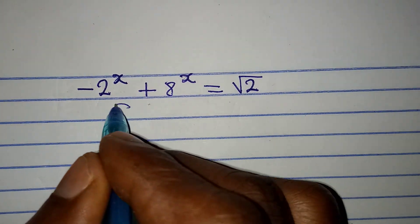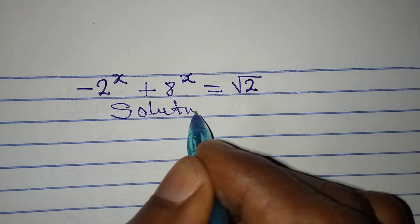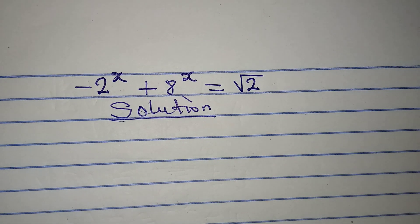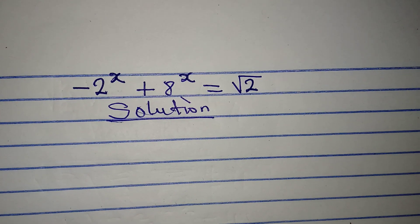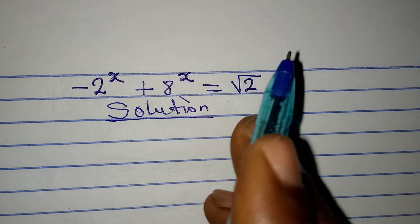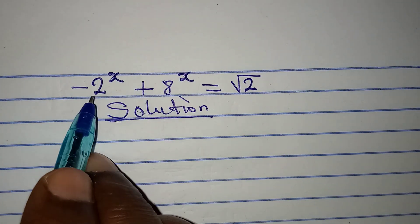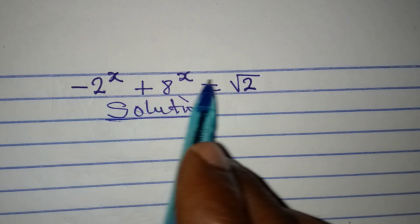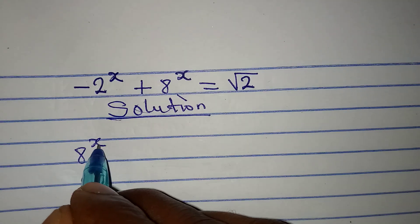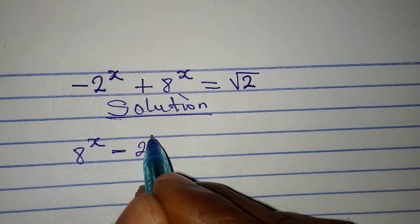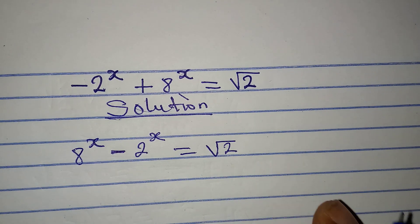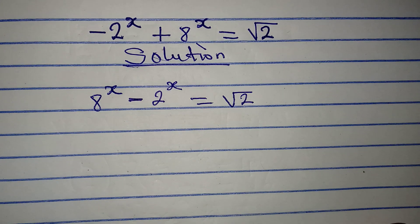Hello everyone, let's solve this problem very quickly. Welcome to Cool Mathematics where we solve problems in detail, one step at a time. The first step we must take is to rearrange this equation — we wouldn't want a negative number to begin it. So I'm going to begin with 8^x rather than minus 2^x, and this is equal to square root of 2. I've not changed anything in the equation.